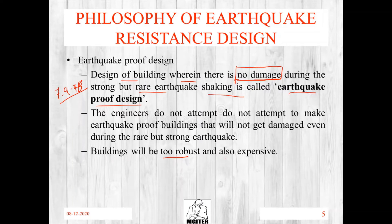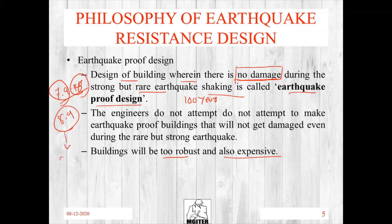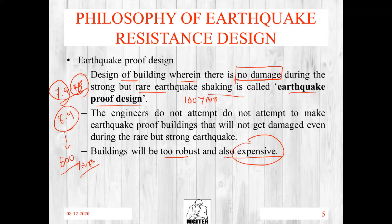However, earthquake-proof design is too robust and too expensive. The building lifespan is 100 years, but a magnitude 7.9 or 8.9 earthquake occurs only once in 500 years. So designing an earthquake-proof building makes construction costs worthless — the building will likely never see such an earthquake in its lifespan. Therefore, this philosophy is not considered useful.